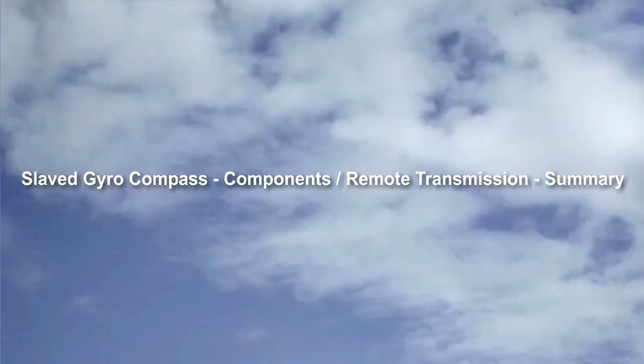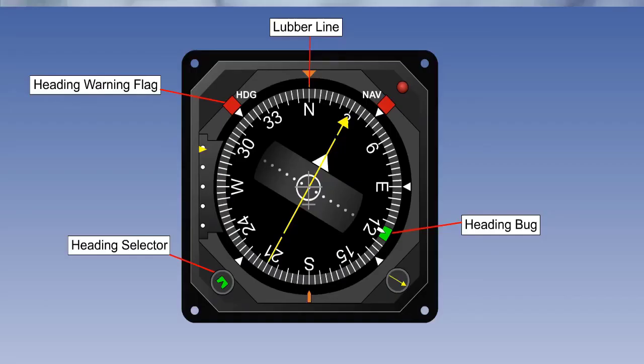Let's summarize this lesson. Compass indicator dials vary with the vintage and the sophistication of the compass but most have a rotating compass card with the heading indicated by the lubber line index at the 12 o'clock position. Additionally, they all have in some form or other a heading selector, a heading bug, and a warning flag if the magnetic input fails.